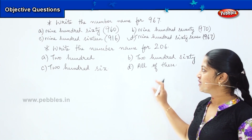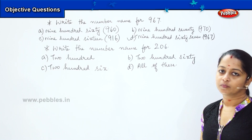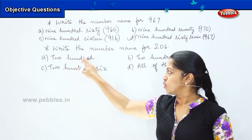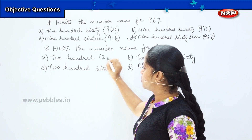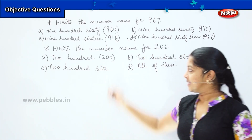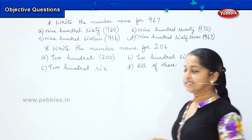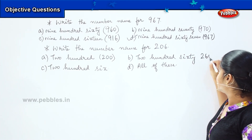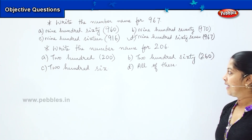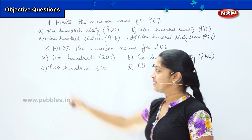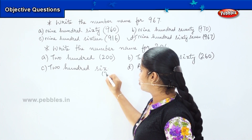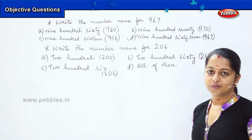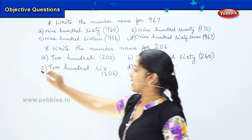Is it possible that one particular number has so many number names? No, that is not possible, so option D is ruled out. Option A says 200 — how will you write 200? It's 200. Is it matching? No. Option B says 260 — how will you write it? 260. That is again not tallying with the question. Option C says 206 — how will you write it? 206. Is option C matching with the question? Yes!